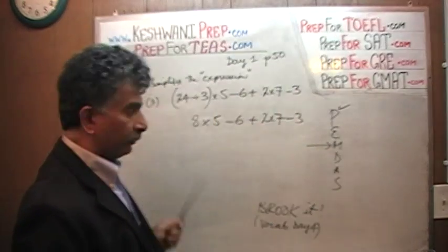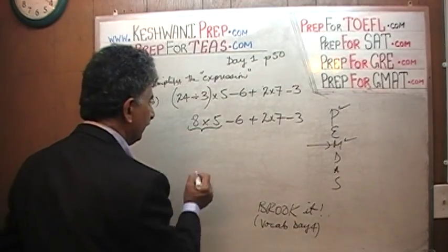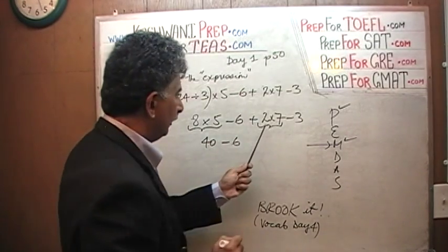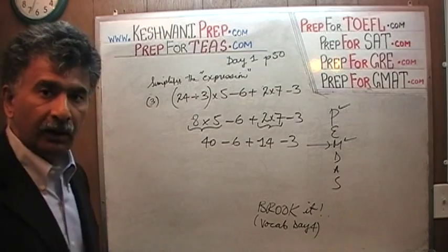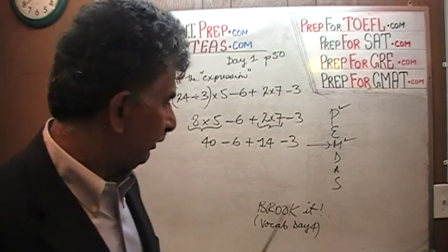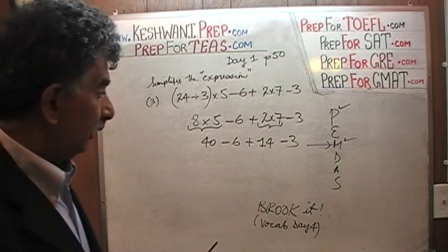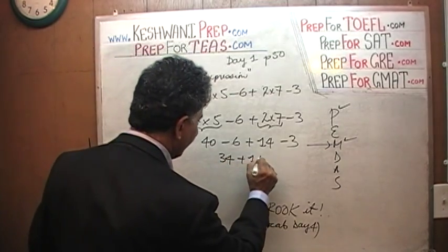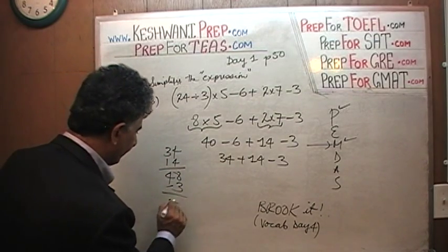Next comes multiplication. If we see any multiplication, we must do that first. We see one multiplication here and another one here. We have to take care of those multiplications first. 8 times 5 is 40 minus 6. 2 times 7 is 14 minus 3. Now we have addition and subtractions. It doesn't matter what order we go in, but the convention dictates that we go from left to right. 40 minus 6 is 34. 34 plus 14 minus 3. 34 plus 14 is 48. Minus 3 is going to give us 45.